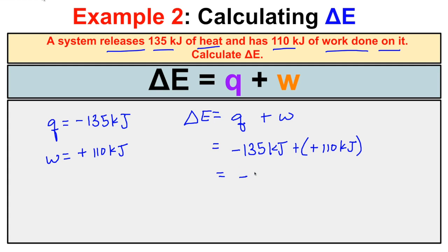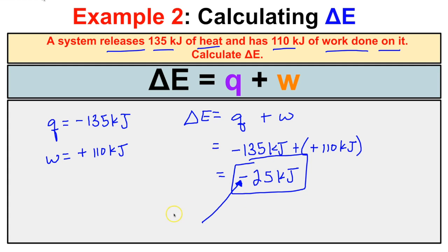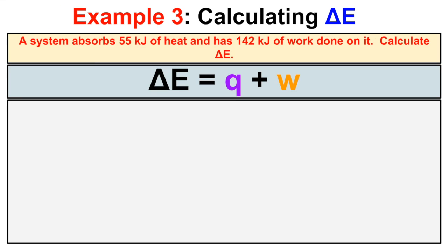The result is −25 kJ, meaning the system is releasing 25 kilojoules of energy overall. Anytime delta E is negative, we have an exothermic process, and the system is releasing energy into the surroundings.